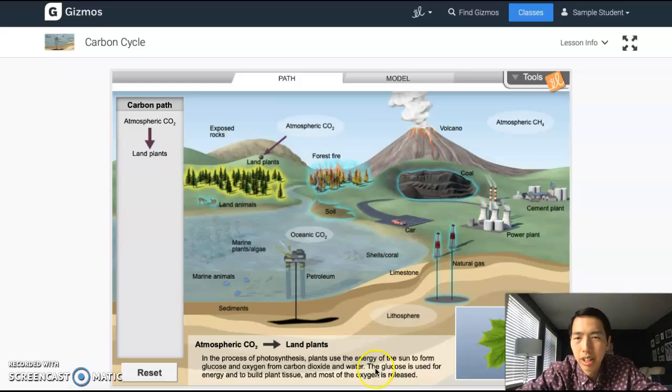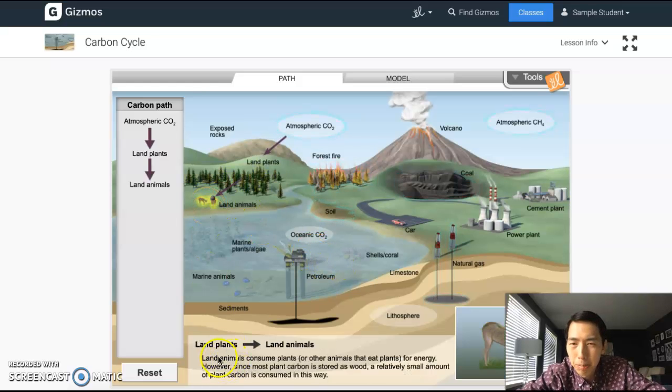So from land plants, what I can do is now click on something else—something that's flashing blue. I've got a lot of options here. I can click on the land animals, I can click on a forest fire, I can click on soil, I can click on coal, and I can click on natural gas. Okay, so there's lots of options to choose from. I'll just go to animals.